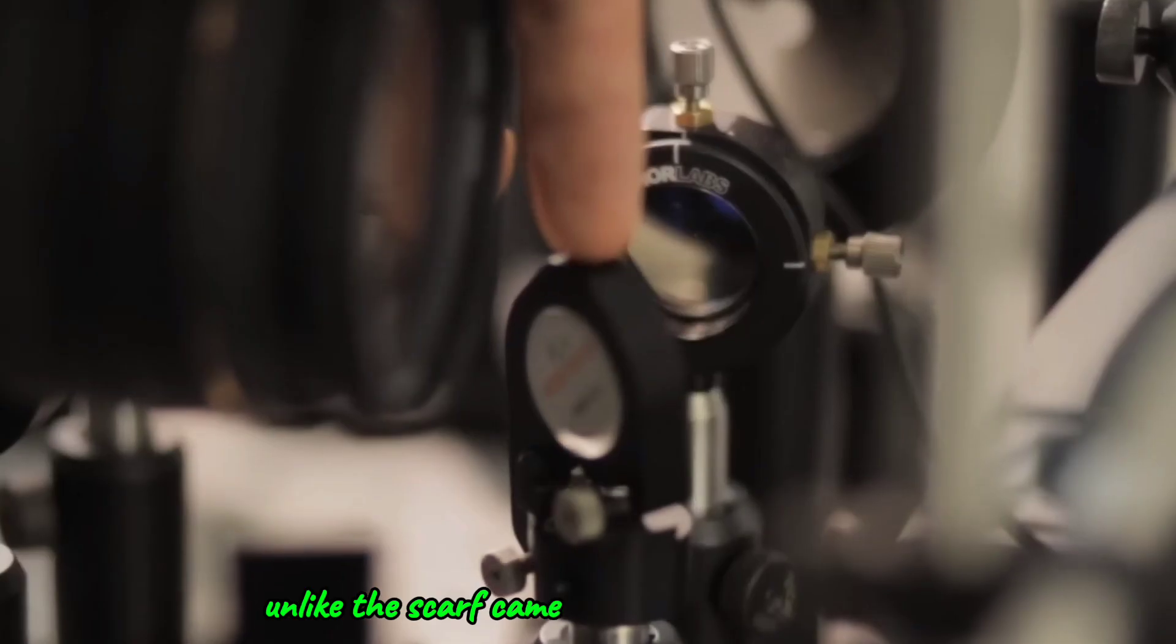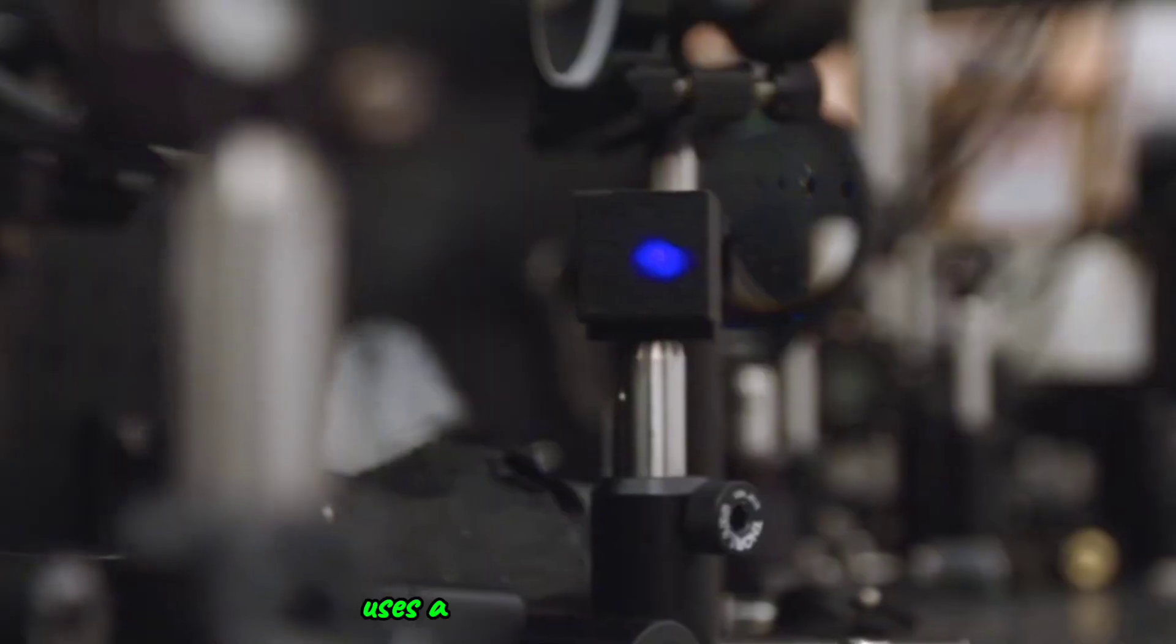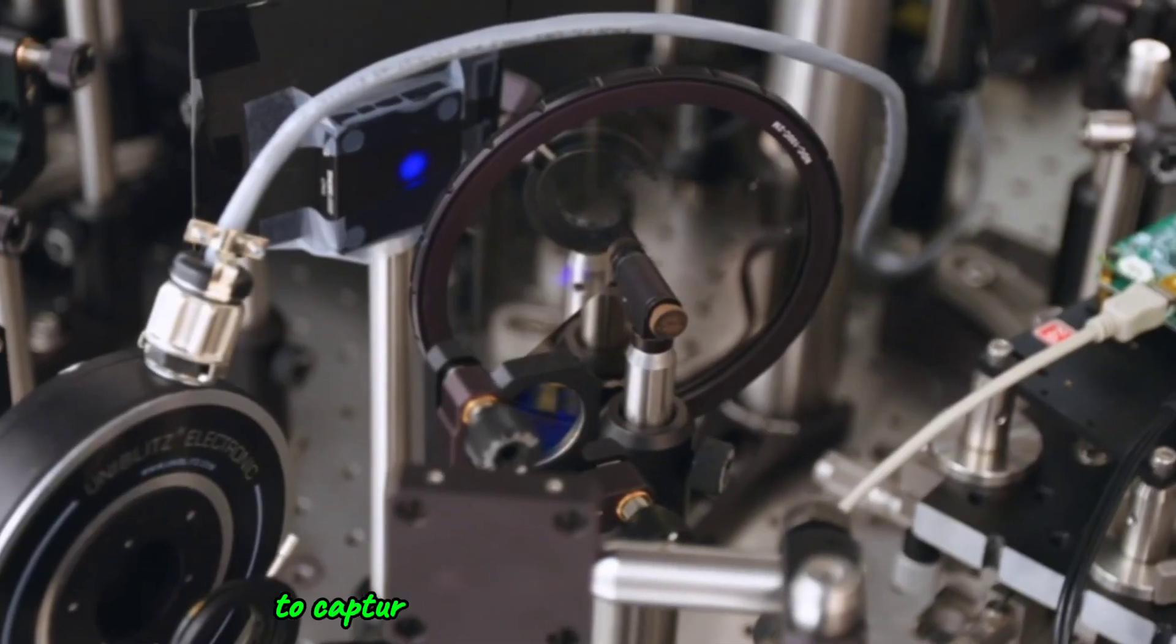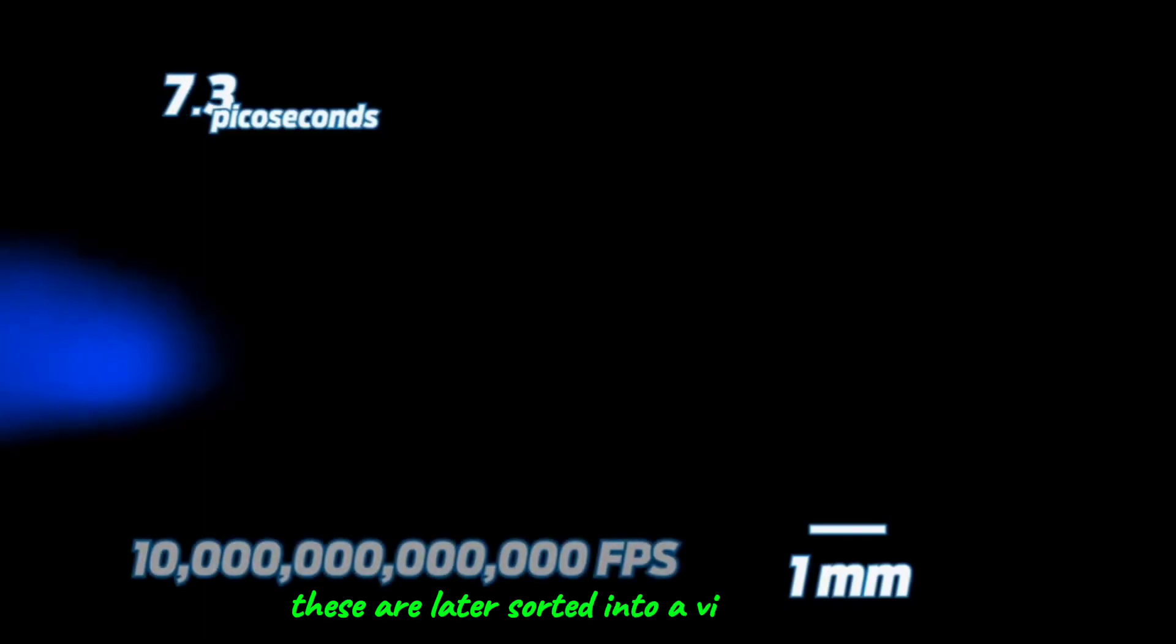Unlike the SCARF camera, this Swedish invention, known as the FRAME camera, uses a unique computer algorithm to capture several coded images in one picture. These are later sorted into a video sequence.